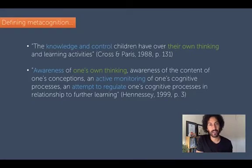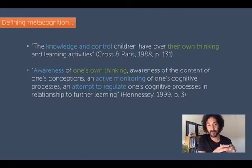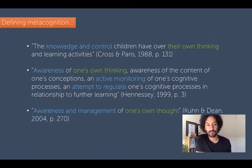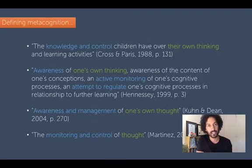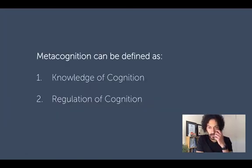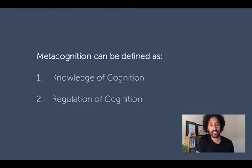To clarify, attempt to regulate means that we're changing it for whatever reason. So we have to be aware of our cognition and then we need to be able to change it — to regulate it. Another definition: awareness and management of one's own thought. The monitoring and control of thought — that word 'control' appearing again, meaning we're aware of it and we can change it, quite similar to regulate. Probably one of the most common definitions, by Anne Brown from 1980 and 1987, defines metacognition as knowledge of cognition and regulation of cognition — two parts.